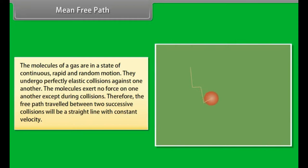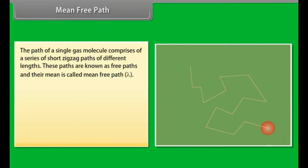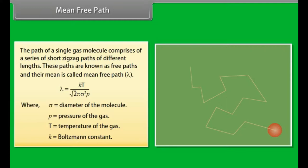The molecules of a gas are in a state of continuous rapid and random motion. They undergo perfectly elastic collisions against one another. The molecules exert no force on one another except during collisions. Therefore, the free path traveled between two successive collisions will be a straight line with constant velocity. The path of a single gas molecule comprises a series of short zigzag paths of different lengths. These paths are known as free paths and their mean is called mean free path. λ equals KT over √2 π σ² P, where σ equals diameter of the molecule, P equals pressure of the gas, T equals temperature of the gas, K equals Boltzmann's constant.